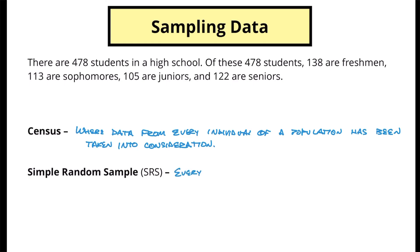So then we go to a simple random sample. A simple random sample is when every member or item — because maybe we're sampling cars coming off an assembly line — has an equal chance of being selected. This could be as simple as drawing a number out of a hat, or using a randomizer on the internet where you dump all your data in and have it randomly select. Older textbooks have a list of random numbers in the back, but we don't use that approach much anymore.